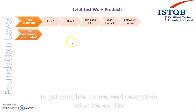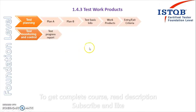The next phase is test monitoring and control. The work products here include the test progress report, where we check whether the phases defined in test planning are progressing — whether they are behind schedule, ahead of schedule, on schedule, or if there are other problems. It should also contain the test summary report at the end.